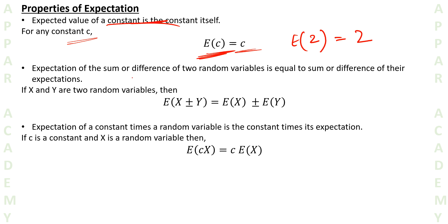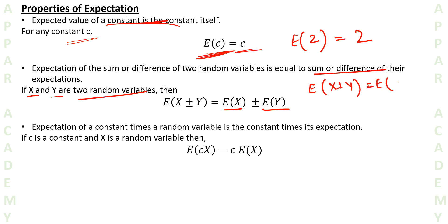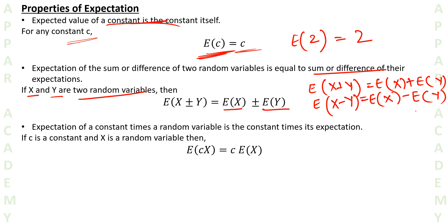The second property: the expectation of the sum or difference of two random variables is equal to the sum or difference of their expectations. If the two variables are x and y, then E[X ± Y] = E[X] ± E[Y]. So E[X + Y] = E[X] + E[Y], and E[X − Y] = E[X] − E[Y]. This is a similar concept to arithmetic mean.